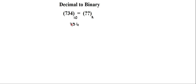I have to divide this number successively by 2, so let us begin the process. I divide this number by 2, and here I note down the quotient and here I note down the remainder. So let's divide: 734 divided by 2.